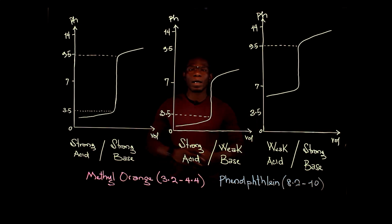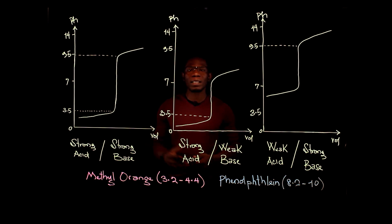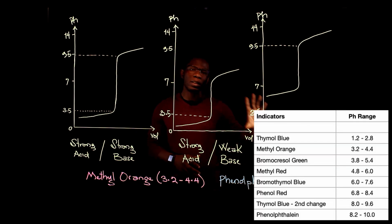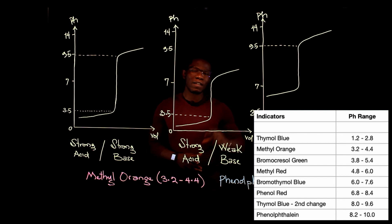We want to understand how we choose the indicators for our titration reaction. Indicators are simply weak acids or weak bases that change color depending on whether they are in an acidic or a basic medium. Looking at the table here with the kinds of indicators available, you will notice that those indicators are effective in a very small range of pH.